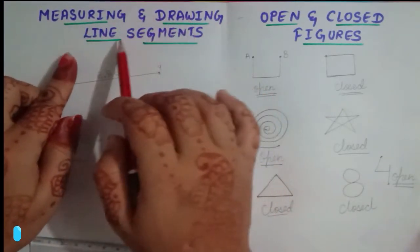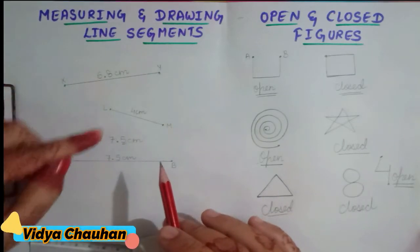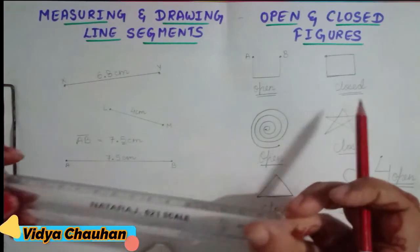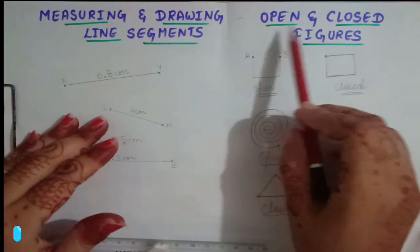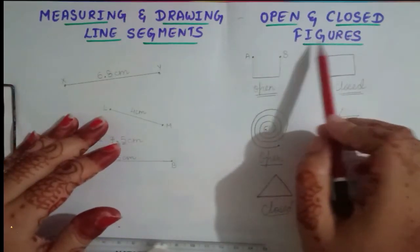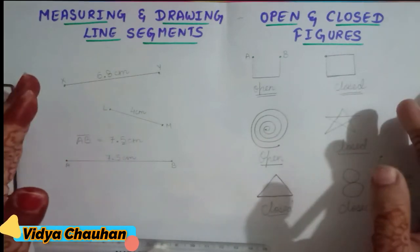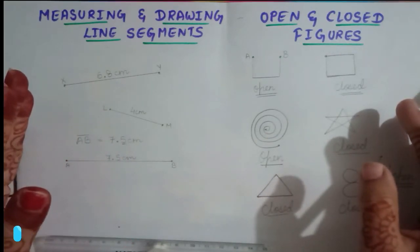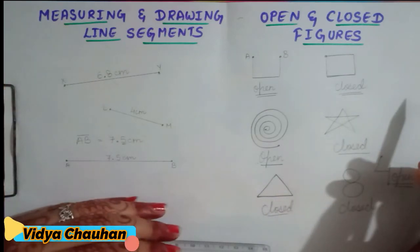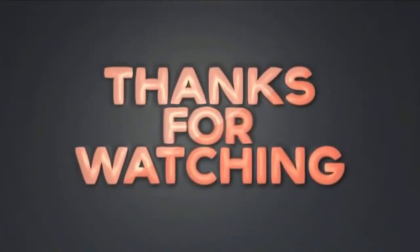Today we have learned how to measure and draw line segments using a ruler, and how to identify open and closed figures. I hope today's lesson is clear. Please go through your book exercises and complete the rest of the questions in your notebook. Thank you, and have a great day!